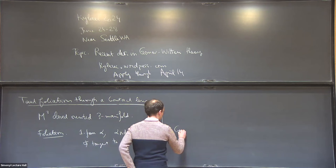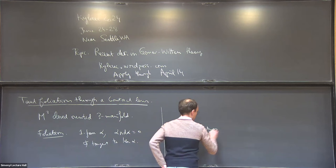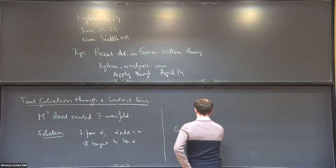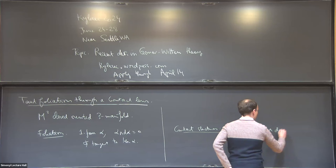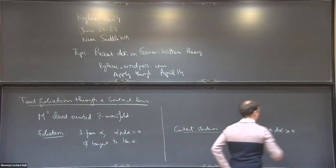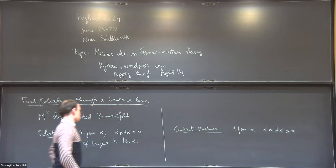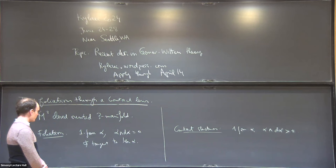This is a very rigid structure. On the other side of the picture we have contact structures, which can also be defined through a one-form alpha, but this time alpha wedge d-alpha is always non-zero. For positive contact structures, this is always positive with respect to the orientation, and this is completely non-integrable — maximally non-integrable.